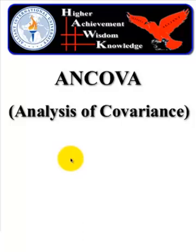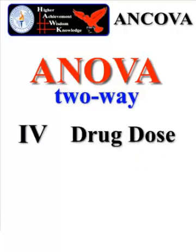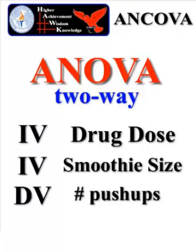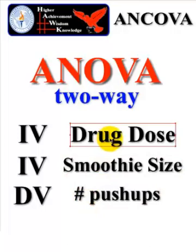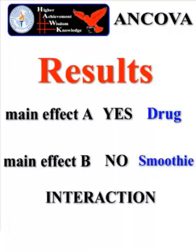We're going to do a quick ANCOVA with this video. ANCOVA stands for the Analysis of Covariance — that's what the C stands for. If you remember back from our two-way factorial ANOVA with the rat smoothies and the wonder drug, where the first IV was the three different drug doses and the second IV was the two different smoothie sizes, and the DV was the number of push-ups. We did the regular two-way ANOVA by hand and we have the video series to watch if you need to get caught up.